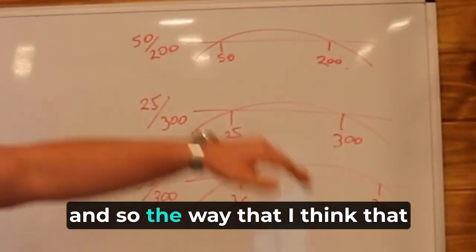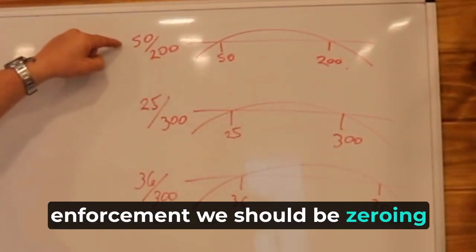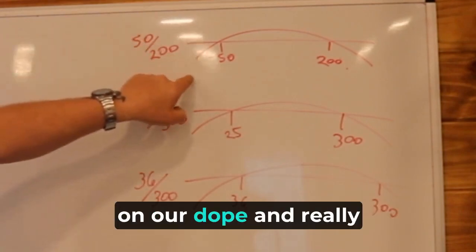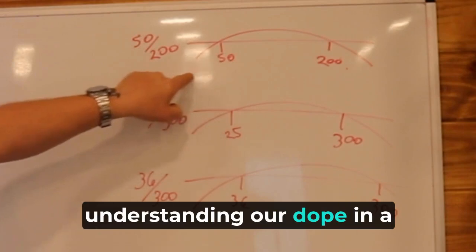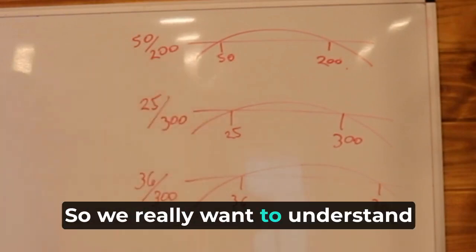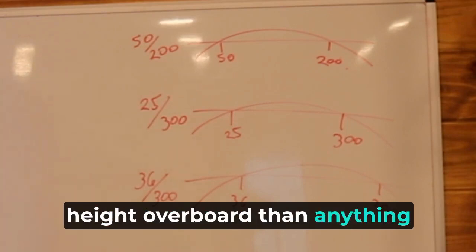And so the way that I think that this should be done is that I think as civilian and law enforcement, we should be zeroing at a 50, 200 meter zero. And then we should be working on our dope and really understanding our dope in the category of 50 meters and below. So we really want to understand what our bullet is doing there. And that has more to do with height over bore than anything of the optic.